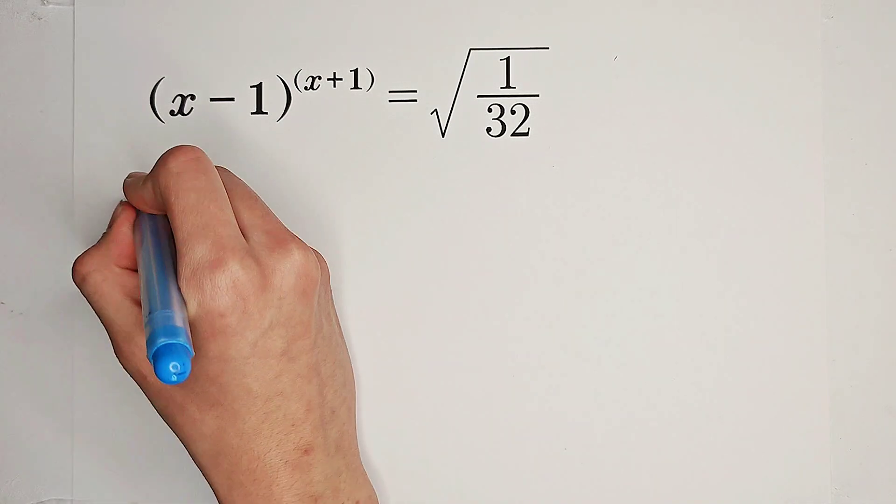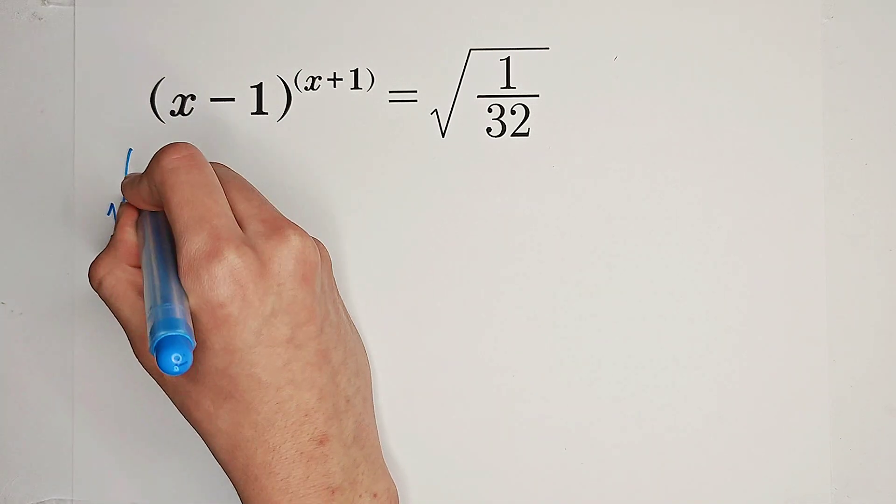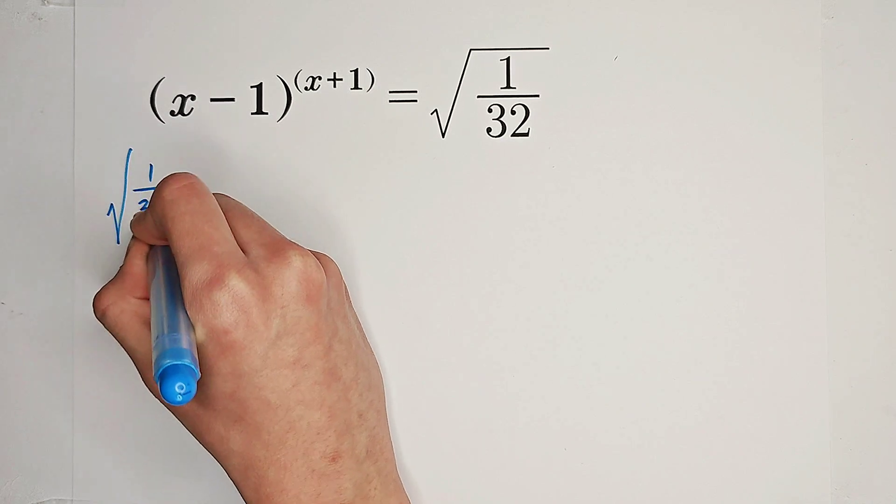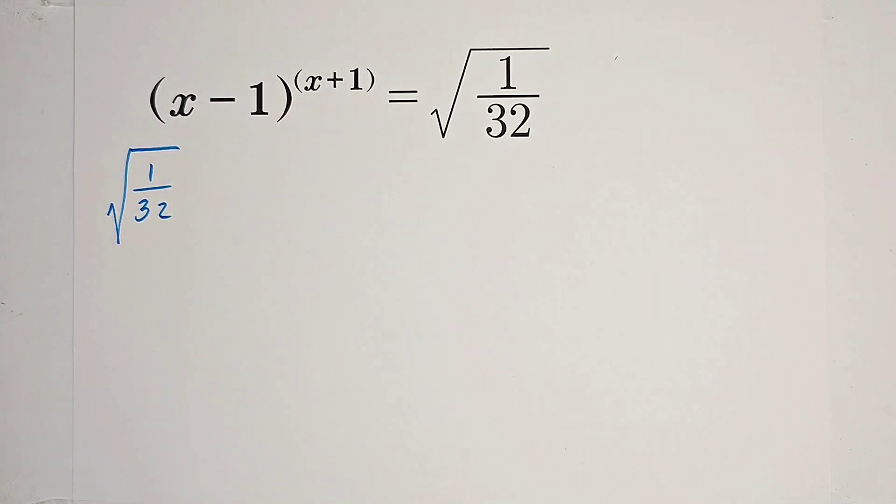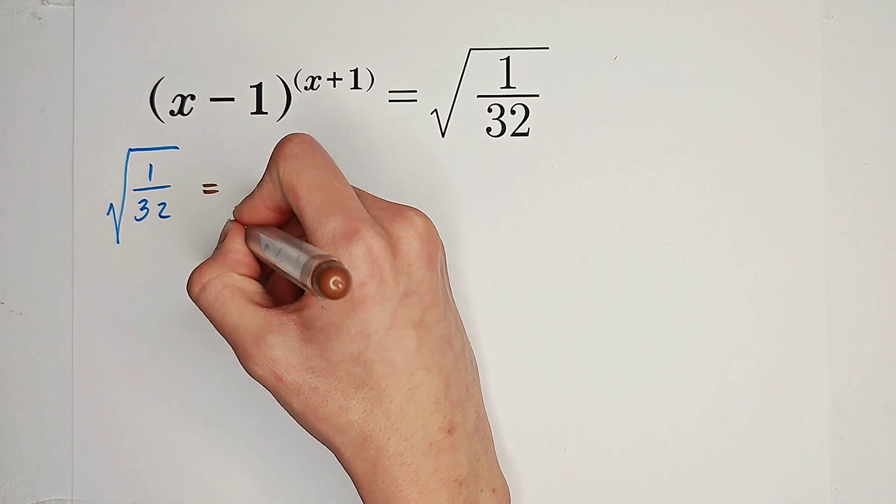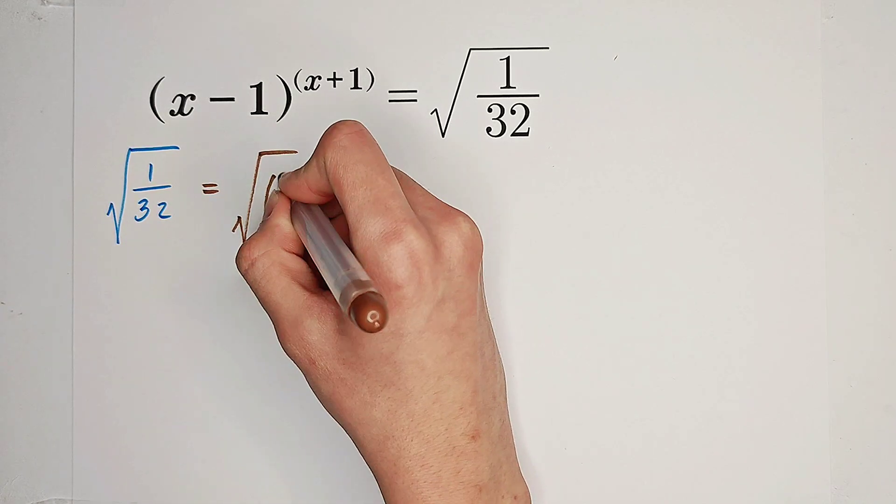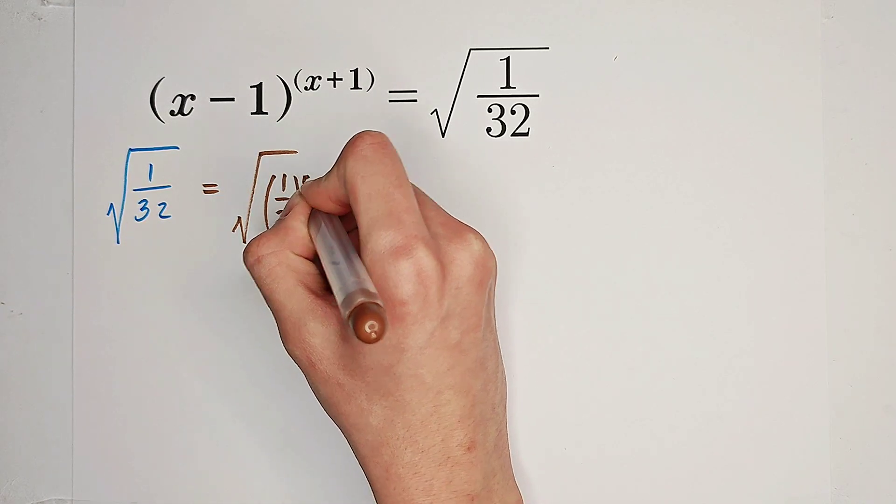How do we do it? Firstly, let's focus on this number. Because 32 is 2 to the power of 5, it comes with square root of 1 over 2 all to the power of 5.